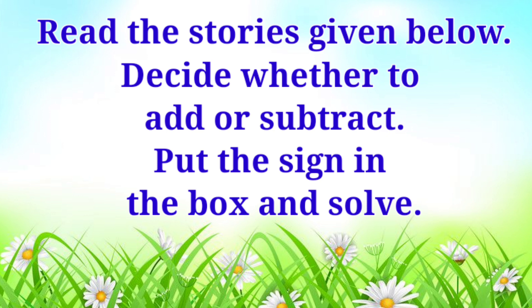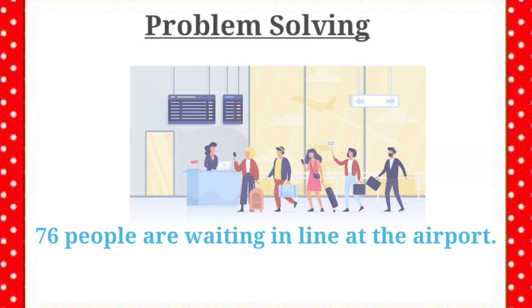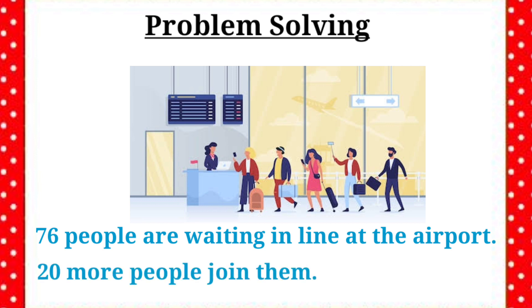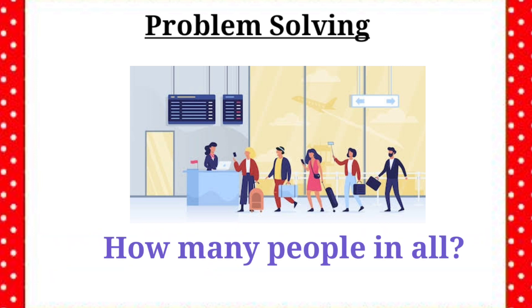Now I will show you some examples. The first example is: 76 people are waiting in line at the airport and 20 more people joined them. The question is, how many people in all? Ok kids, let's think. Here, what will we do? Addition.